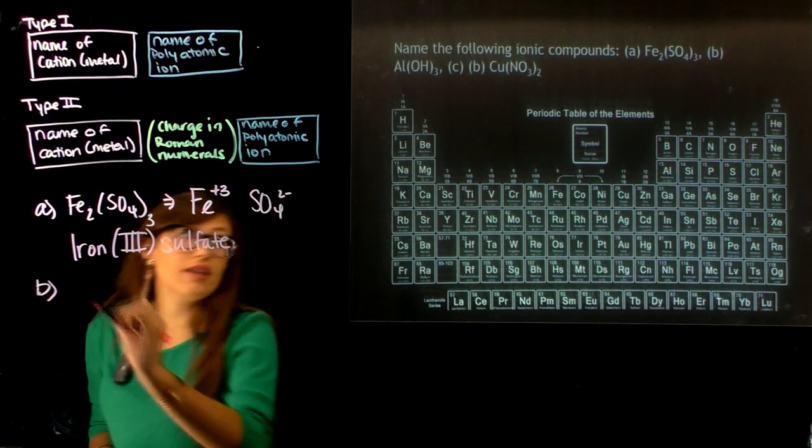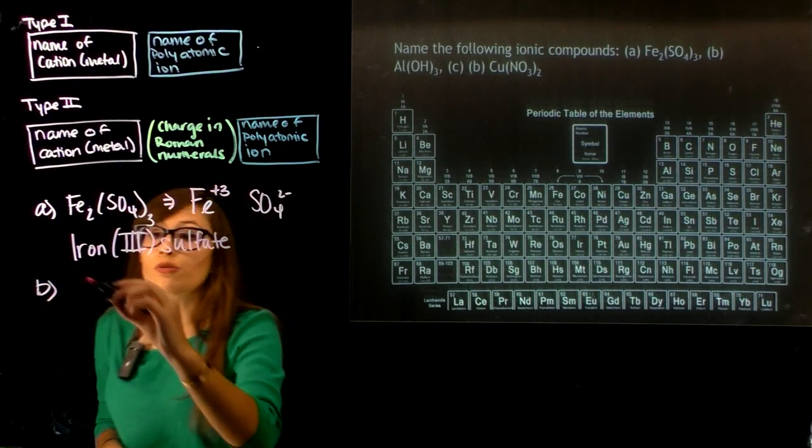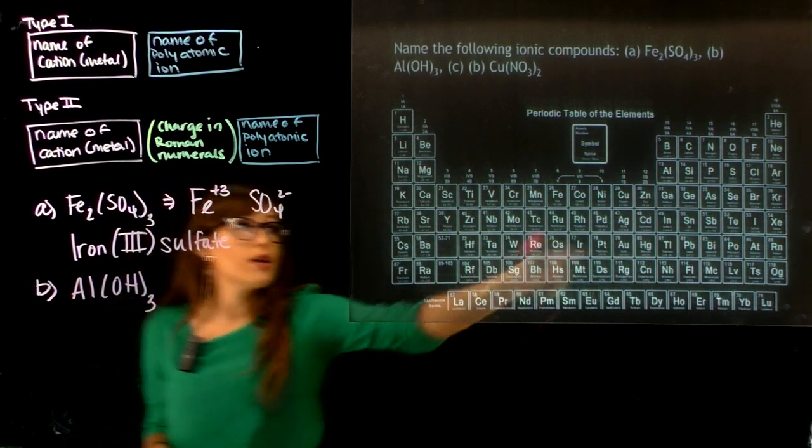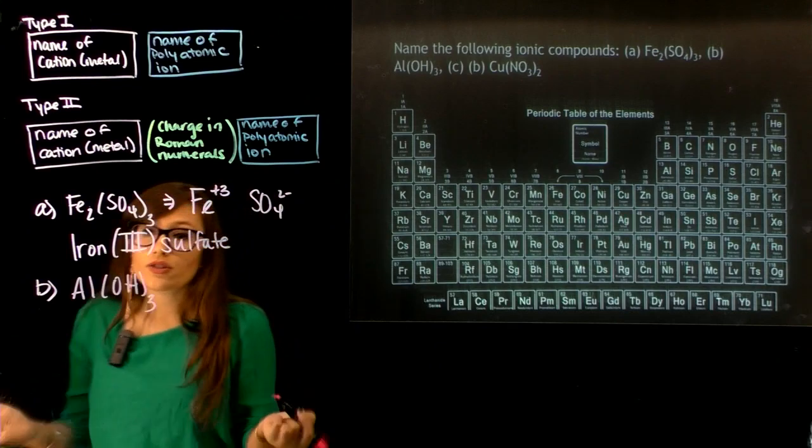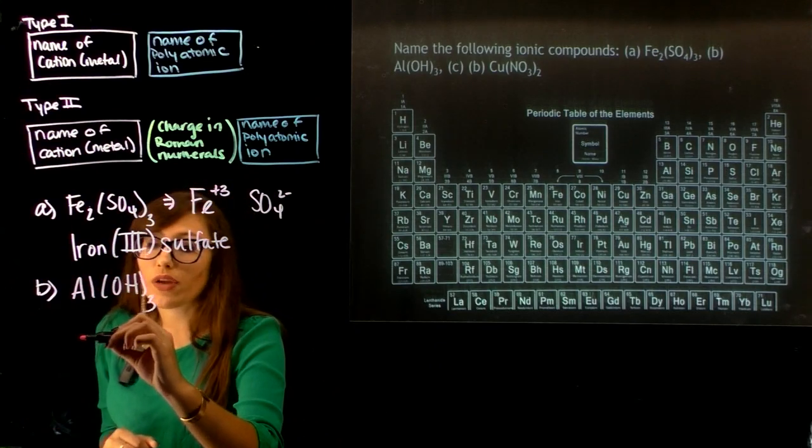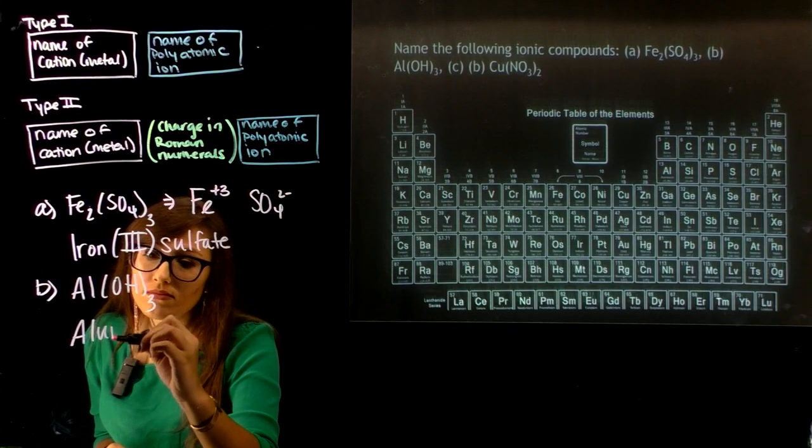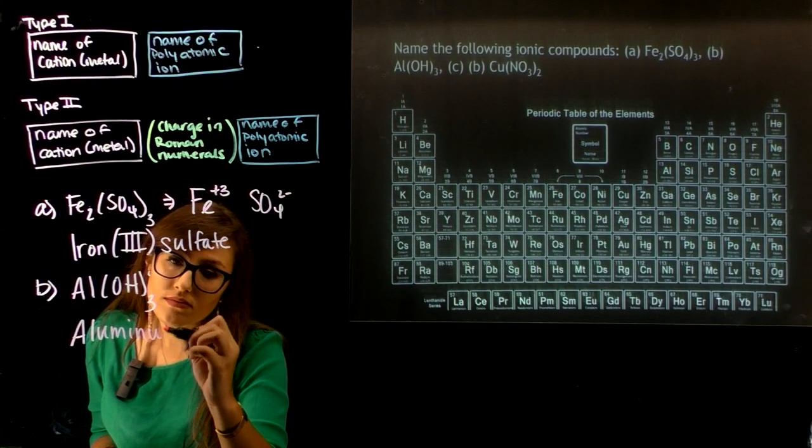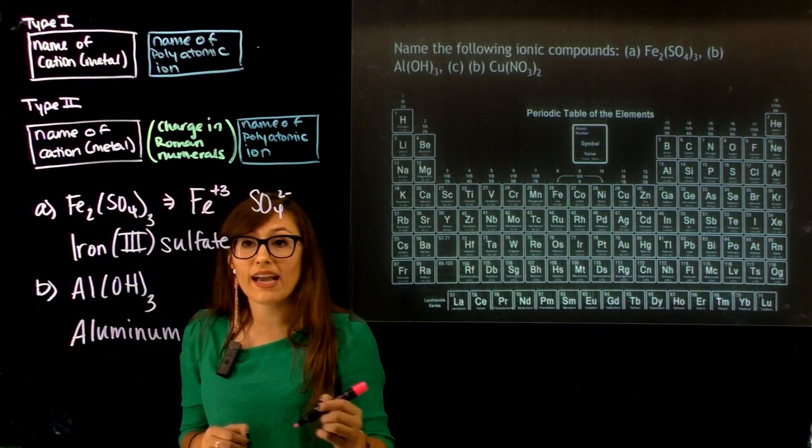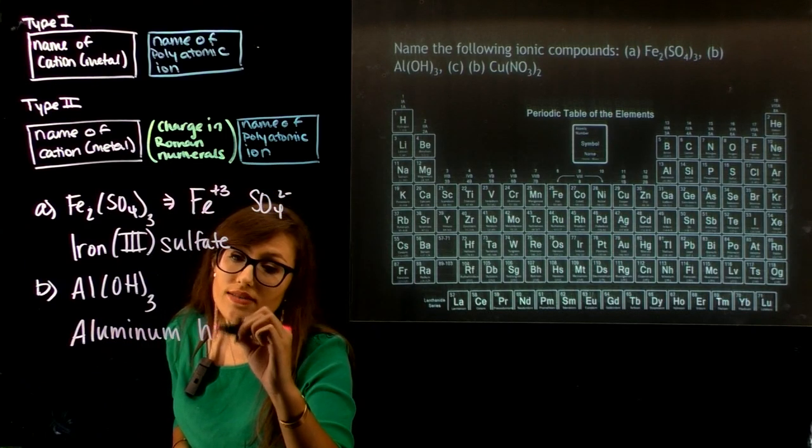In part B, we have aluminum, Al(OH)₃. Aluminum is a main group element, so we name this corresponding to Type 1. We have aluminum, and then the name of our polyatomic anion in this case is hydroxide.